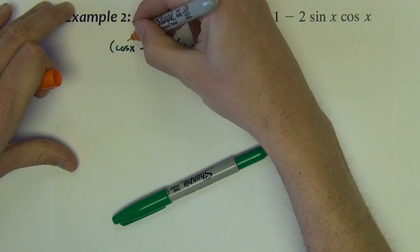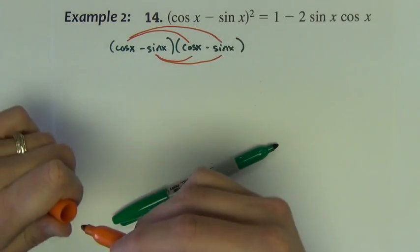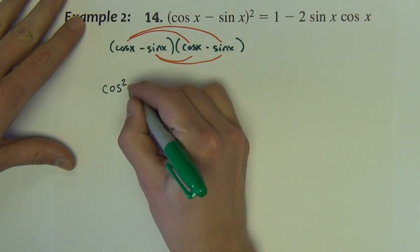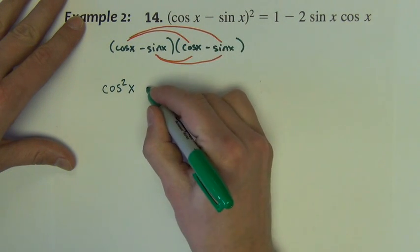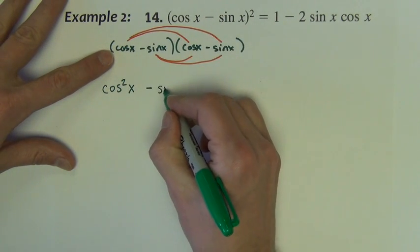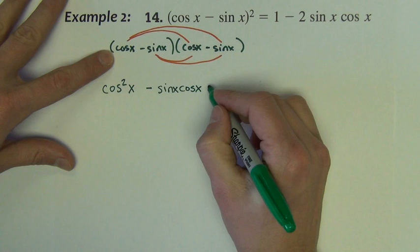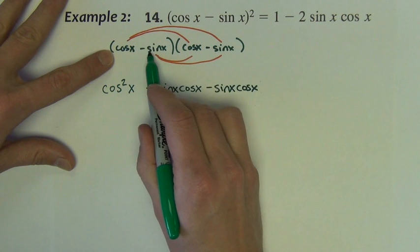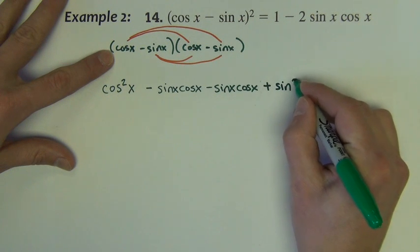Cosine x minus sine x times cosine x minus sine x, and that's what the second power means. So we can now run through our steps of foiling these together. Cosine times cosine is cosine squared x. Cosine x times negative sine x is negative sine x cosine x. On the inside, I have the same product, another minus sine x cosine x. At the end, we've got negative sine and negative sine, which is positive sine squared x.